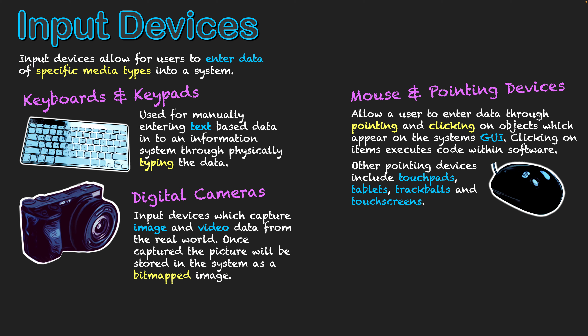The next area is digital cameras. They're input devices which capture image and video data from the real world. It could be a still image or a sequence of images strung together — video — as well as the audio associated in many cases. Once captured, the picture will then be stored in the system as a bitmap image, meaning it's remembered based on the pixels that make up that picture.